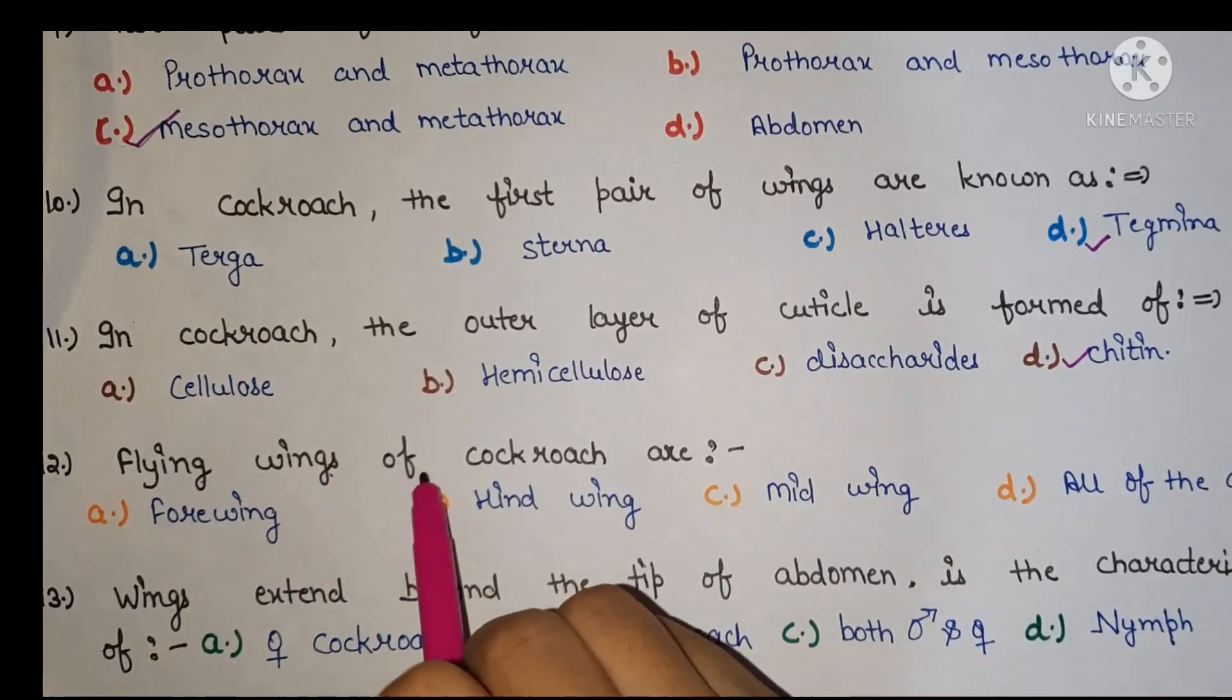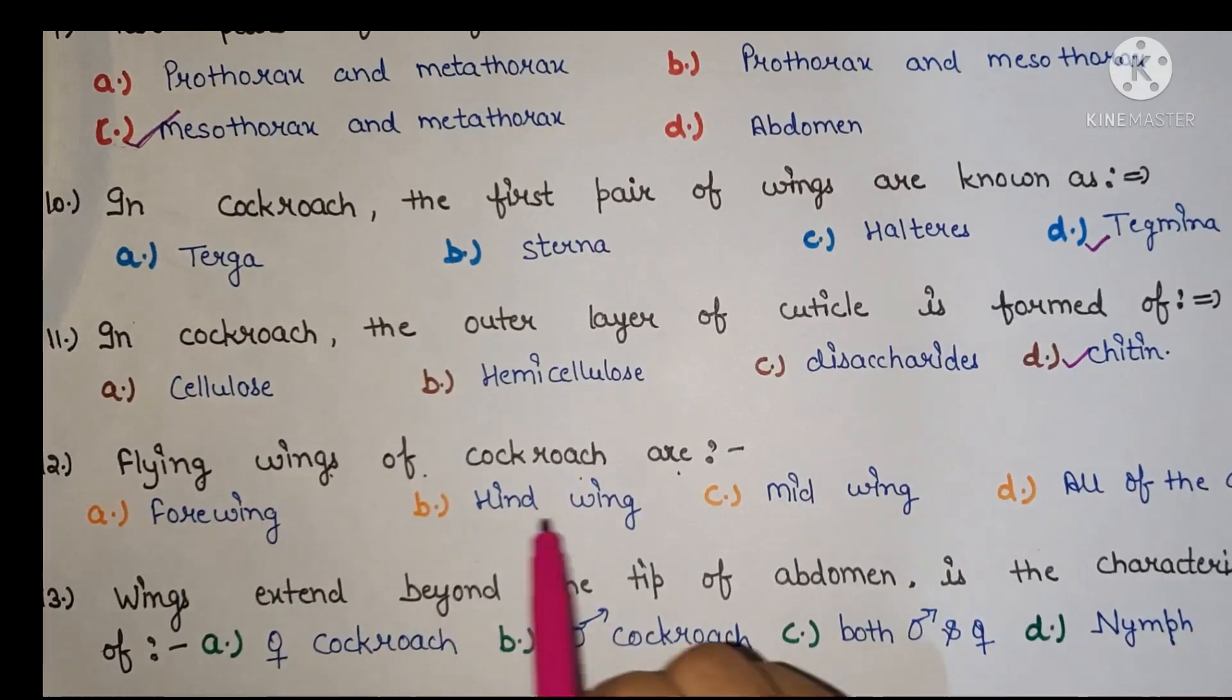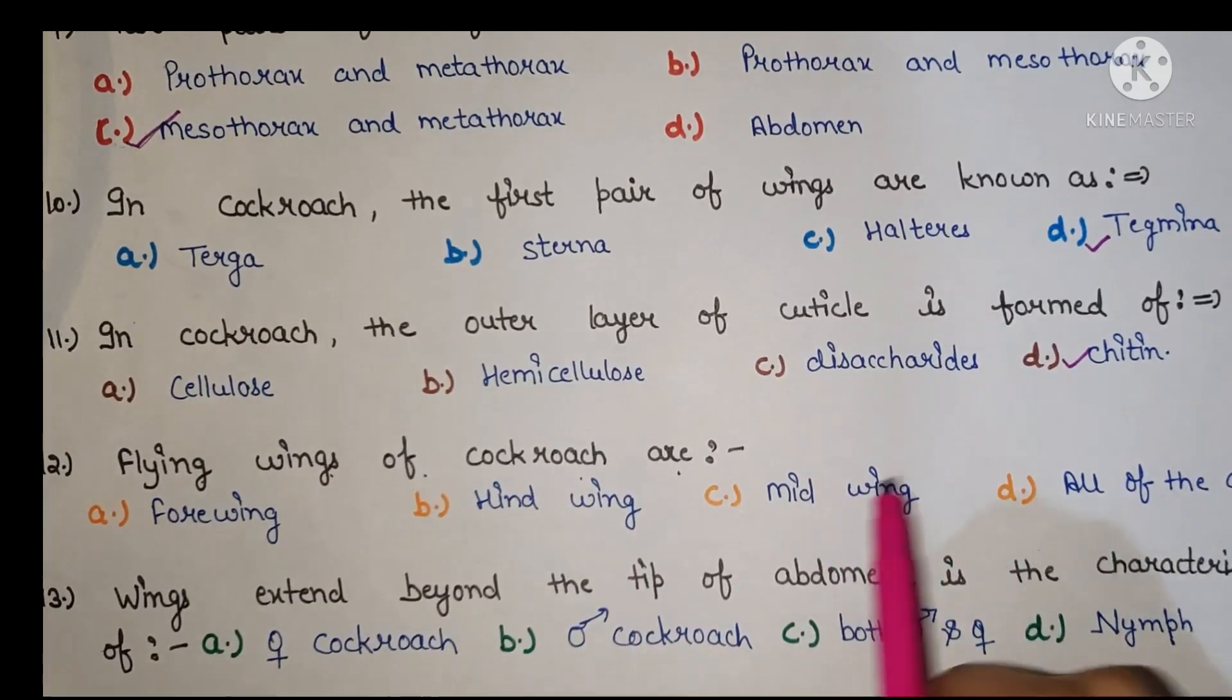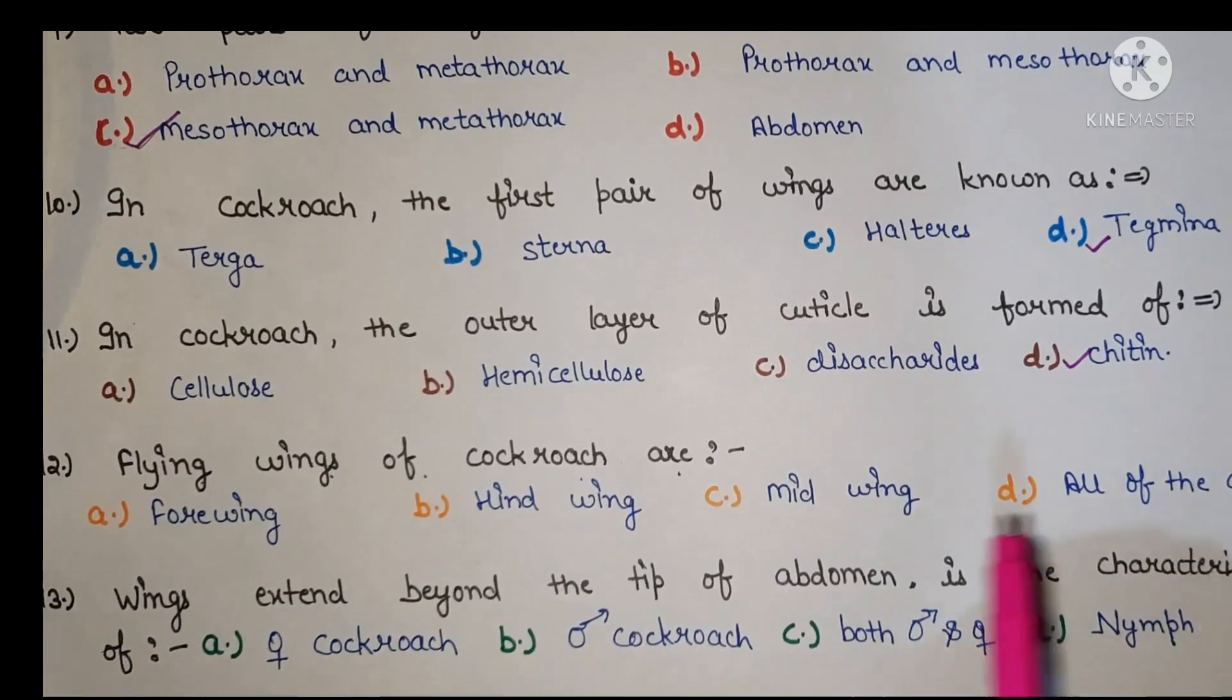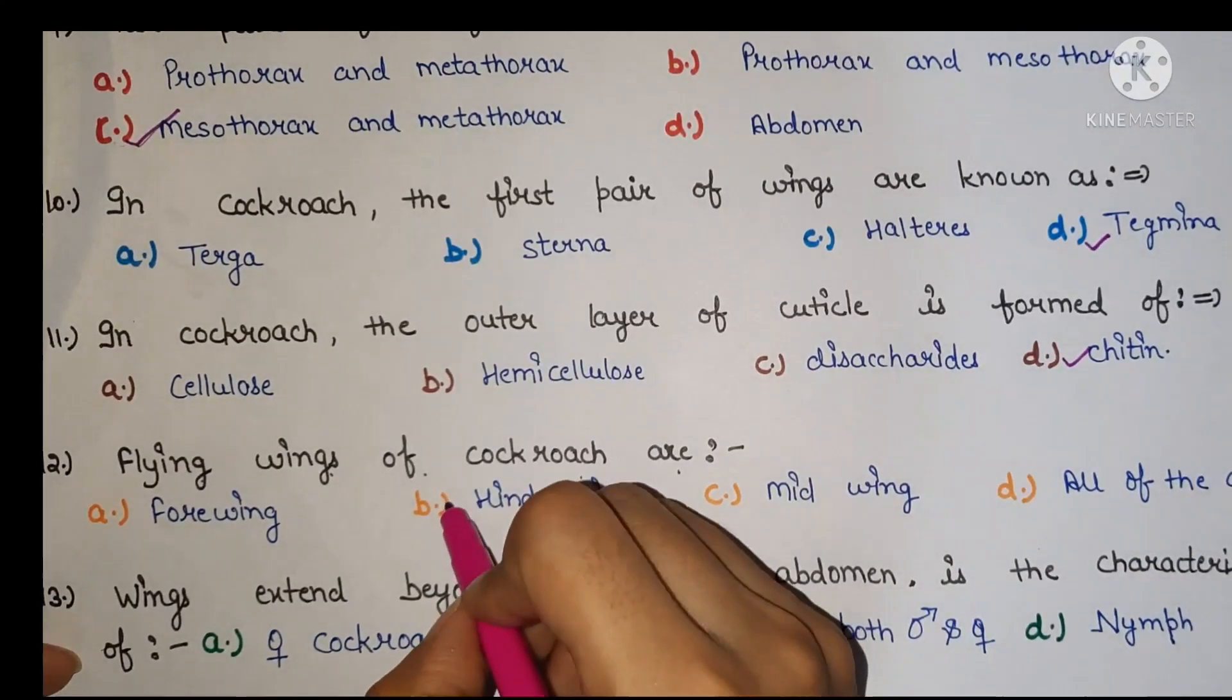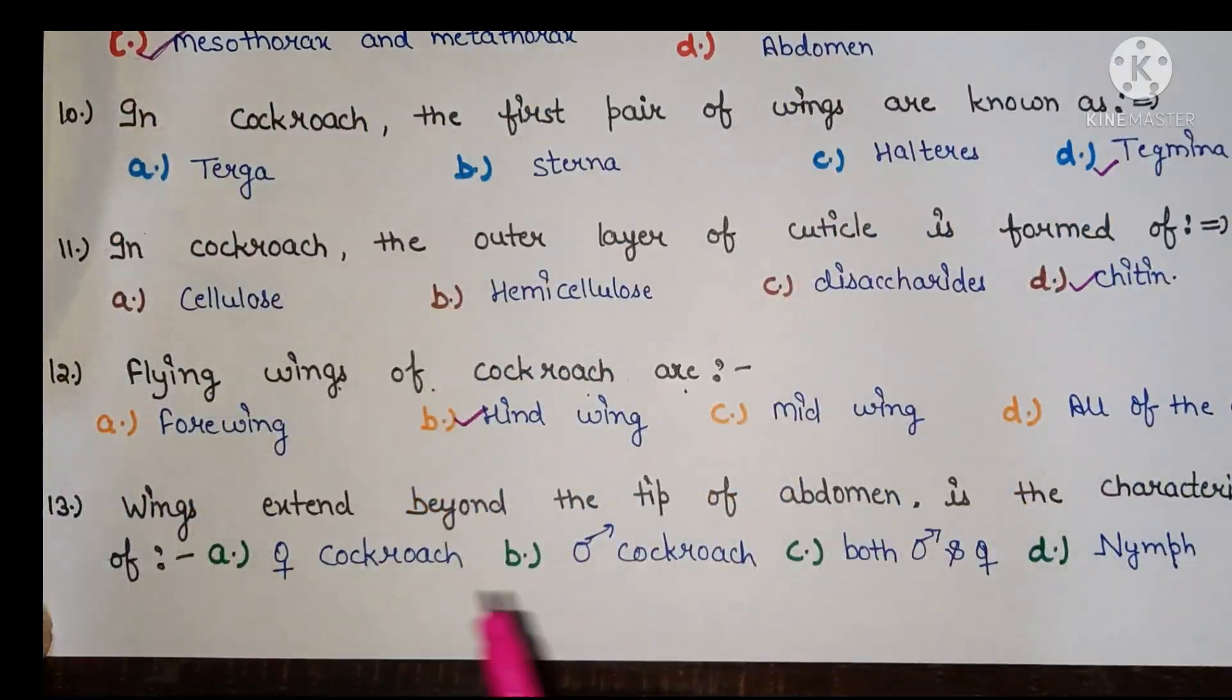Next, flying wings of cockroach are forewing, hindwing, midwing, all of the A, B, C options. Right answer is hindwing.